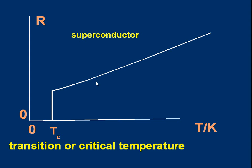The temperature where the change occurs is called the transition temperature, or the critical temperature, and different materials have different transition temperatures. The symbol for transition temperature is T subscript C, to remind us it's also called critical temperature.